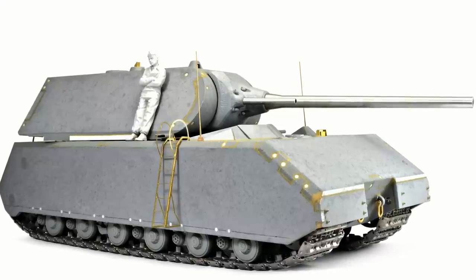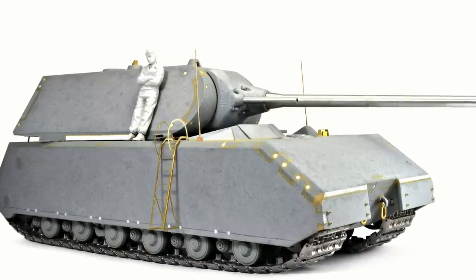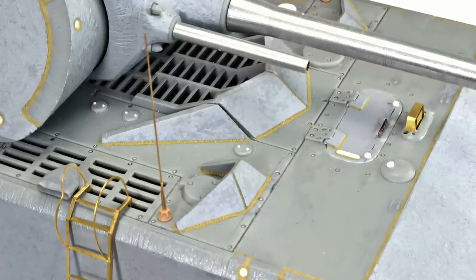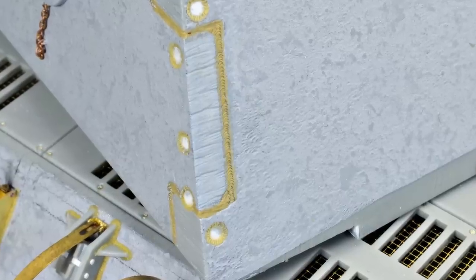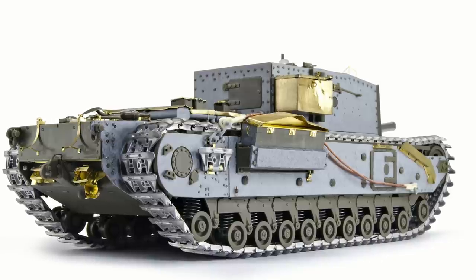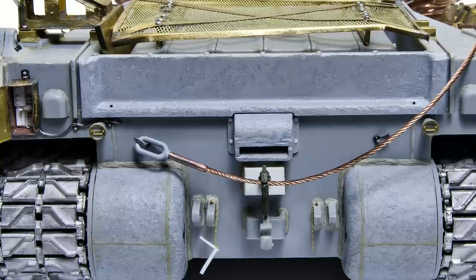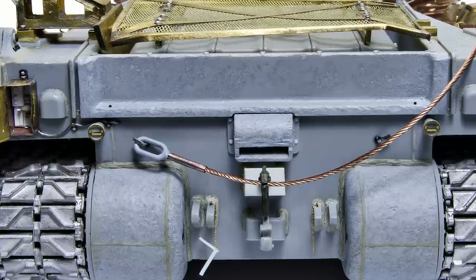I think weld seams are one of the most important details on armor models. But why is that? Because when you think of it, every tank consists of massive steel plates welded together. Of course there are some exceptions, but in most cases they are held together by welding, and let me tell you, those things can sometimes look quite gnarly.